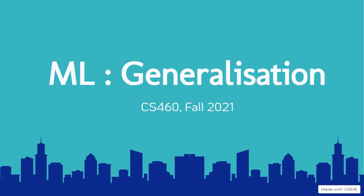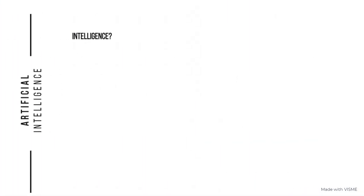Moving on to the next slide, we have encountered something called artificial intelligence multiple times in the past, for the last few years or decades. This brings to mind the question: what indeed is intelligence? Because if we are trying to create something called artificial intelligence, we need to specify what intelligence means, to indicate that we have indeed achieved AI.